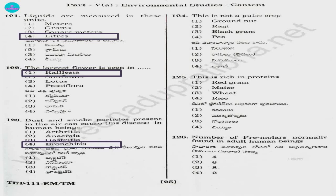Question 124. This is not a pulse crop: 1) groundnut, 2) ragi, 3) black grams, 4) pea. Answer is option 2, ragi, because they are millets.